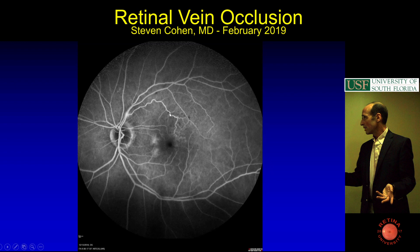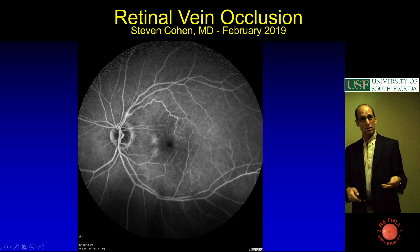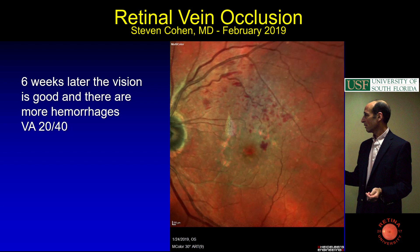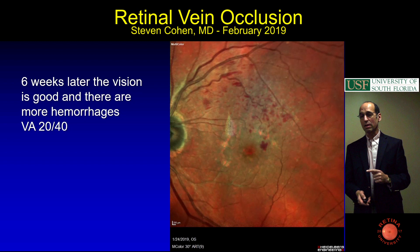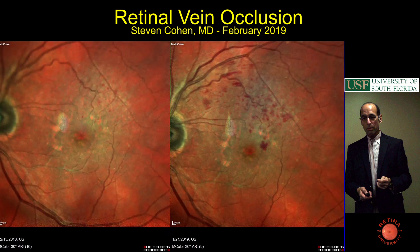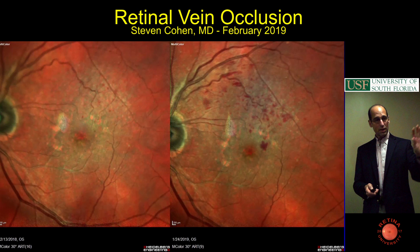Six weeks later it's like, oh yeah, it's a vein occlusion. She's still doing well though—you don't treat her; it's her better eye, but you watch her. This could convert into something that needs treatment. Branch vein occlusions: if you see anything that's in one little area of a vein, that's probably a branch vein occlusion.